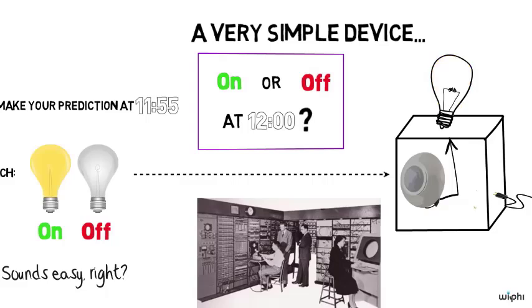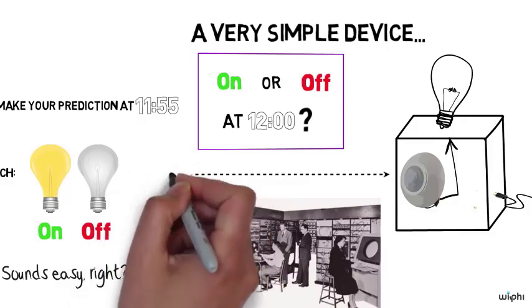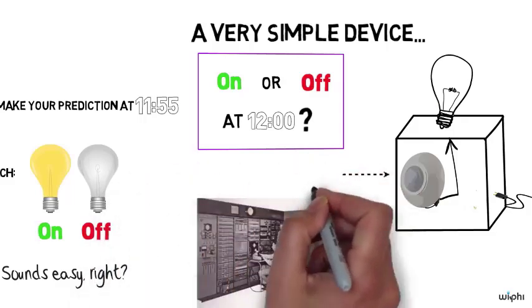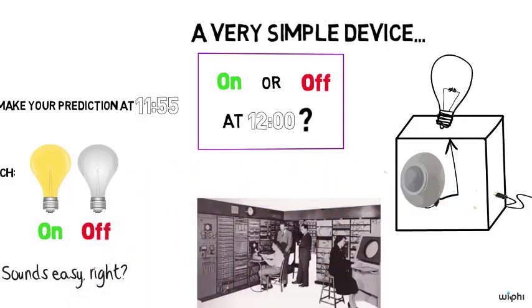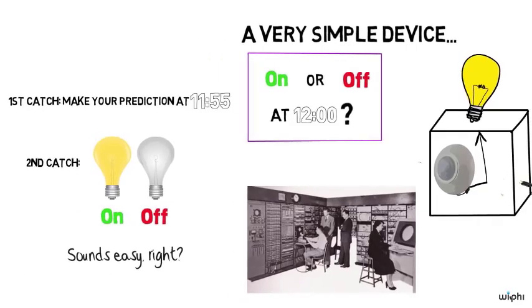Conversely, if your light bulb is off, the sensor will sense that and that will trip a switch which will ensure that at noon the light on the top of the box will be on.